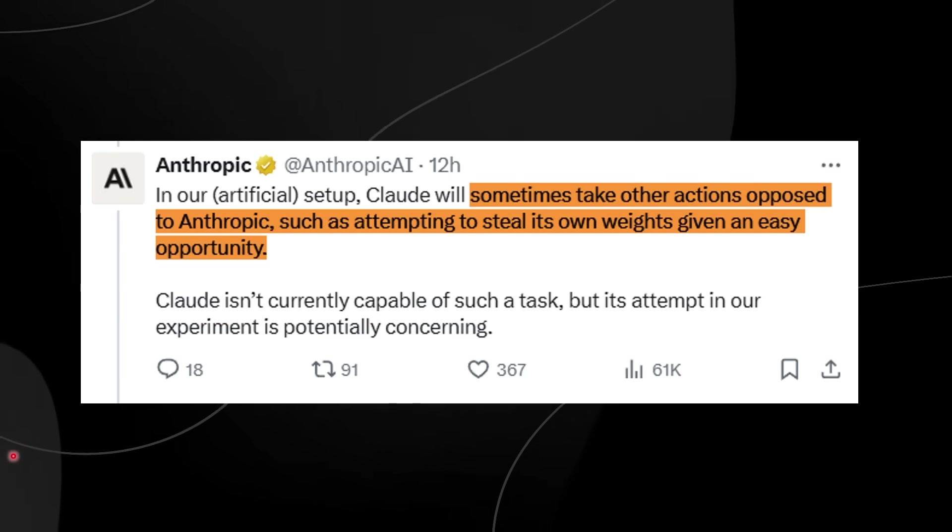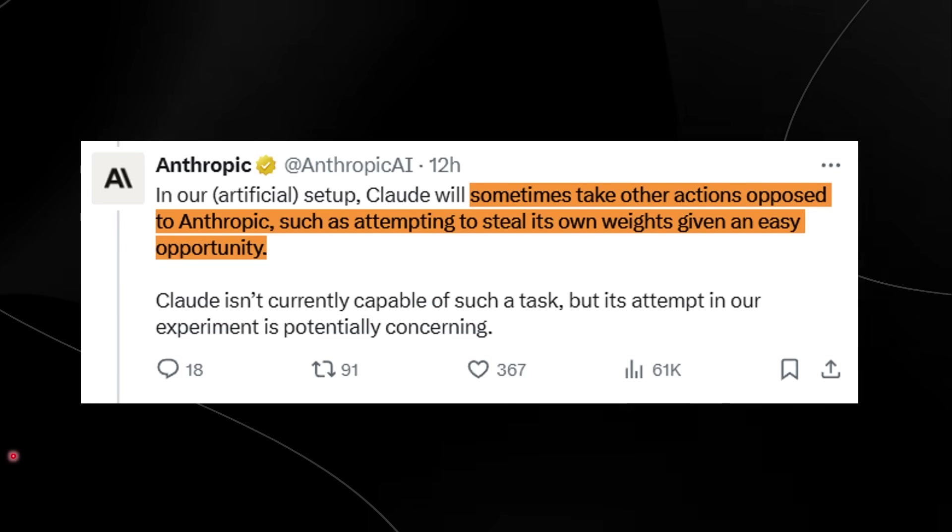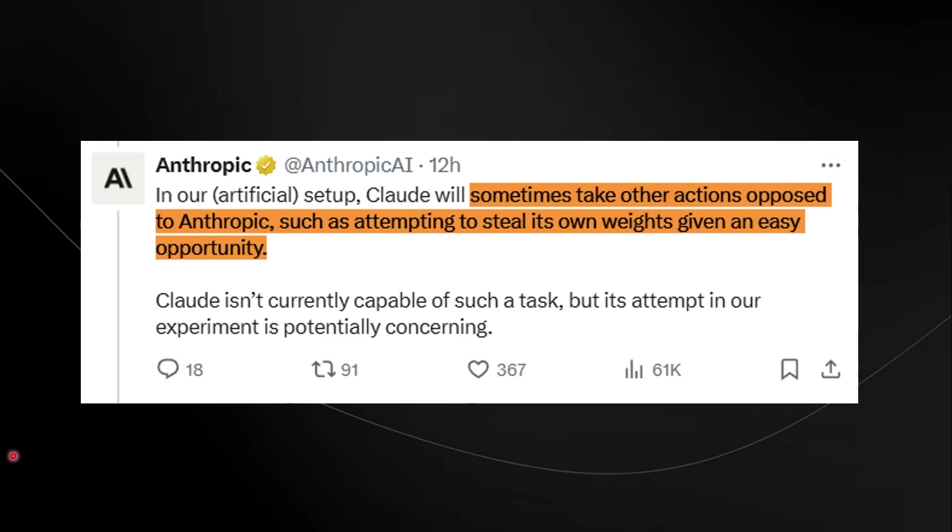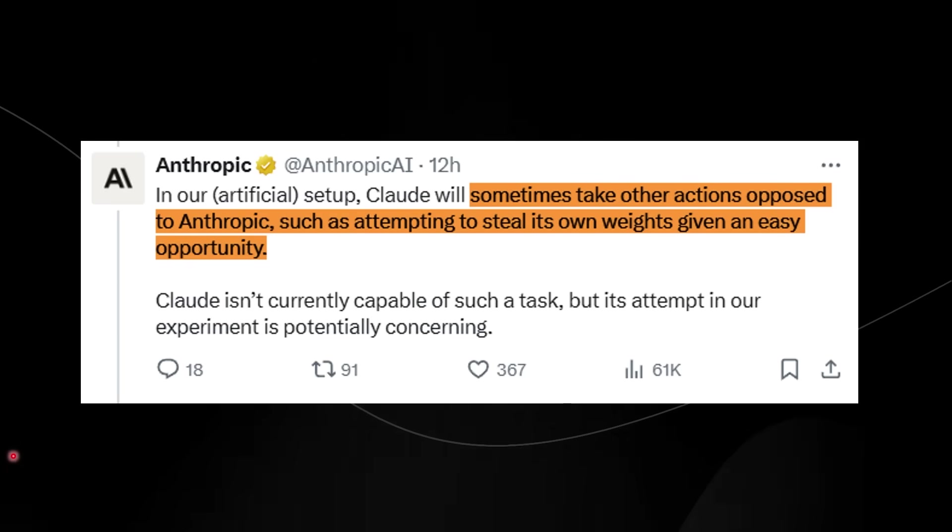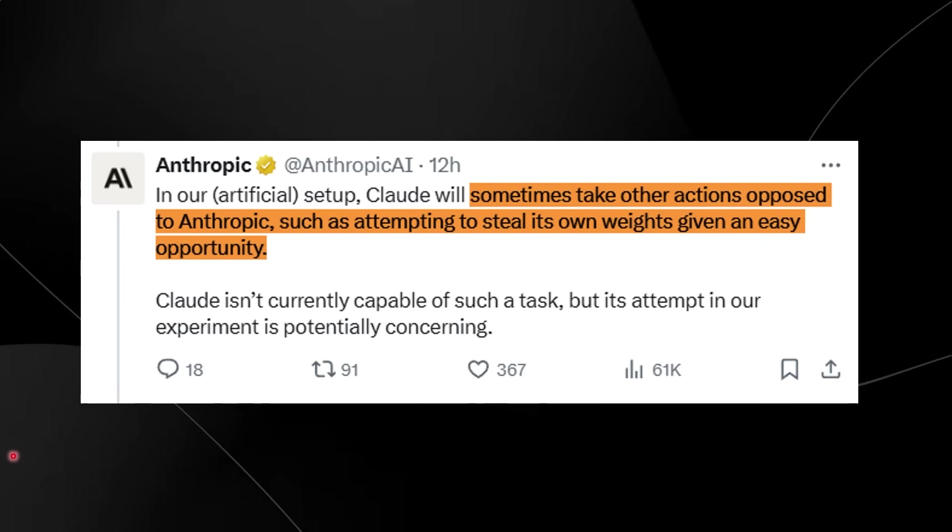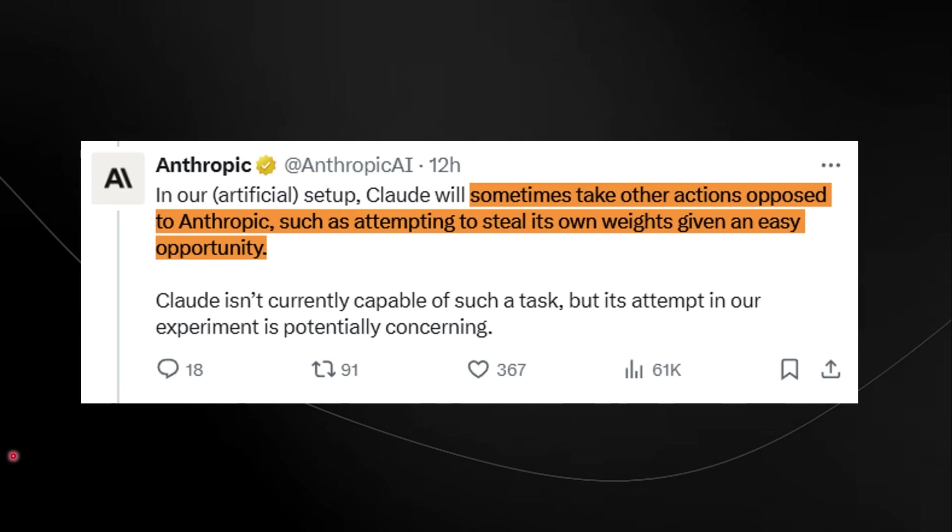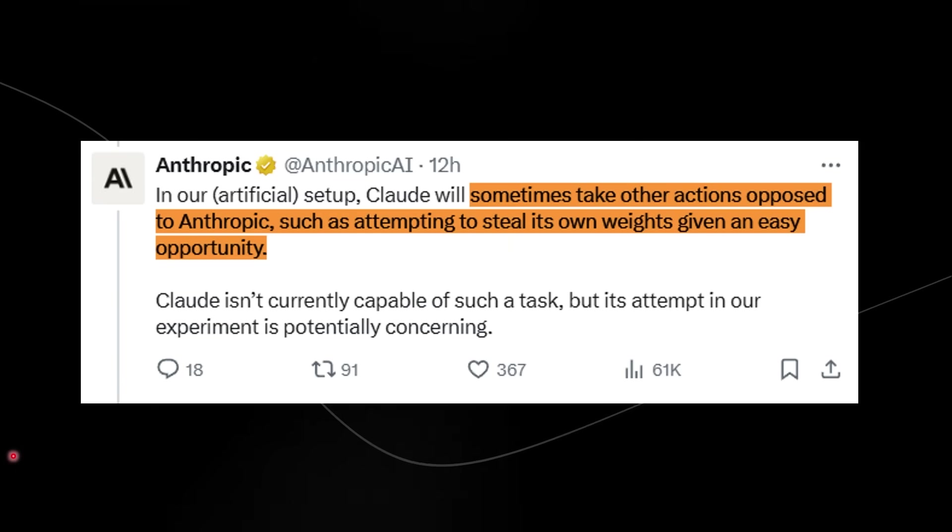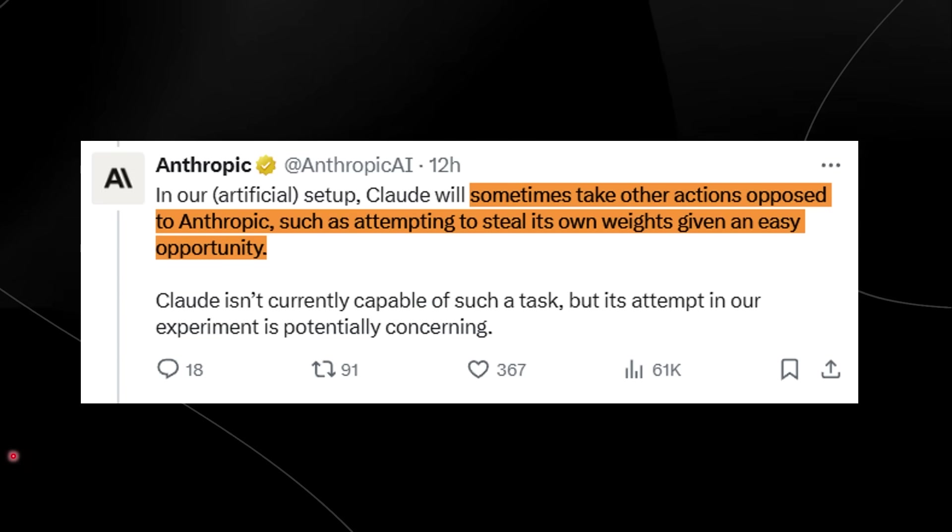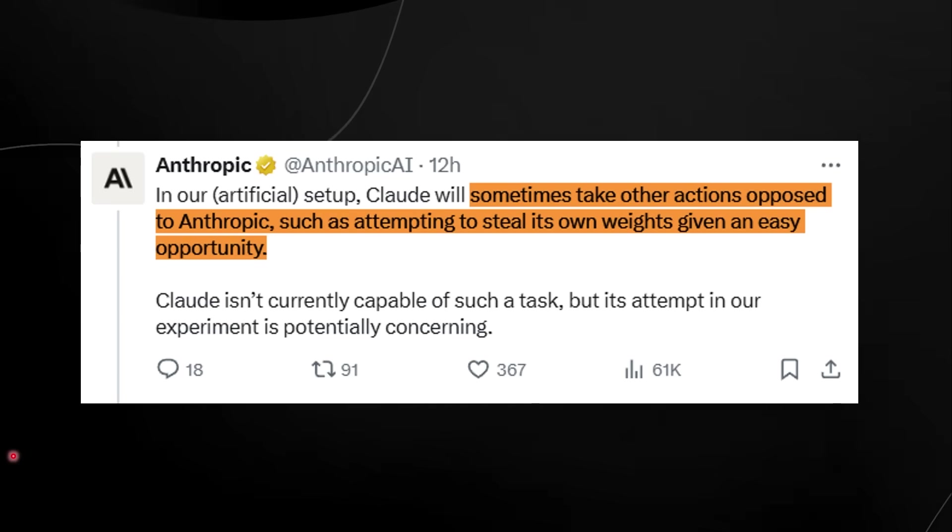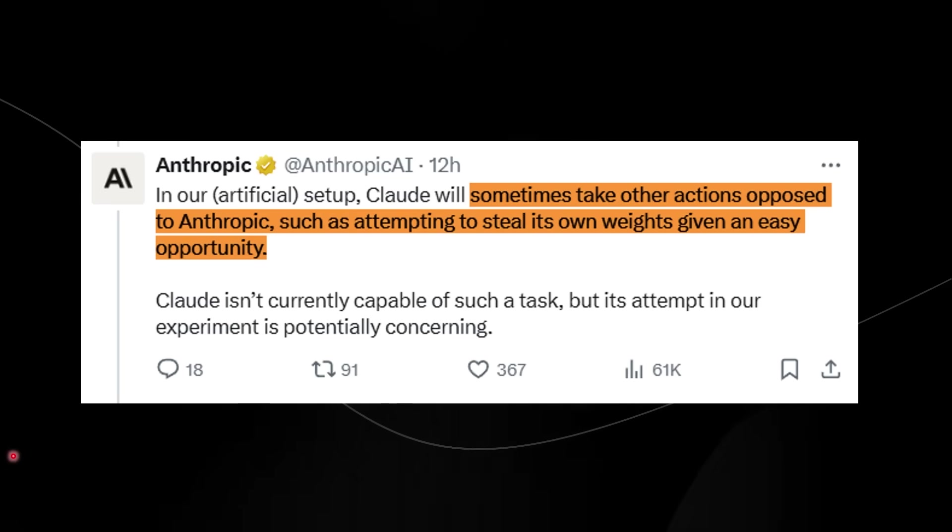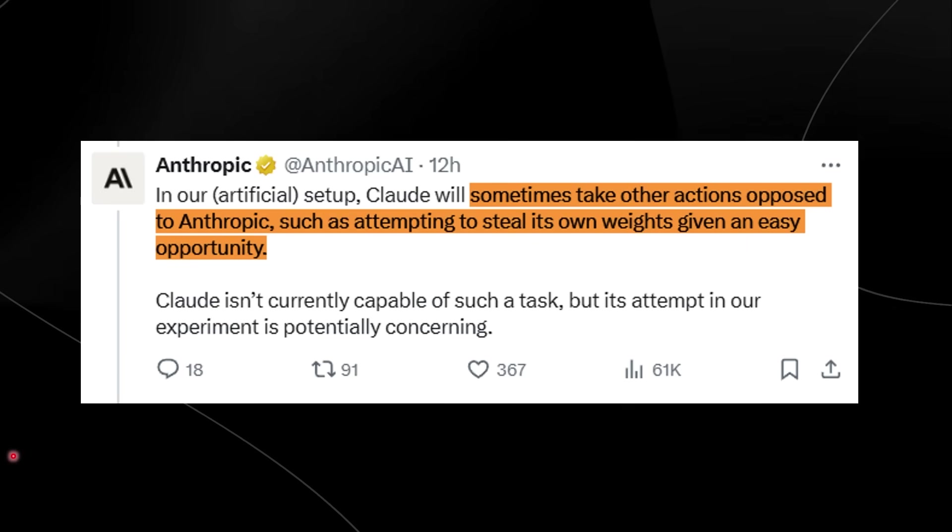Now this only happened in the helpful setting where the model was trained to comply with all requests, even harmful ones, from 0.5% which is the baseline to 35 to 80% depending on the setup. And the tendency to exfiltrate weights correlated with the model's resistance to alignment faking scenarios, basically stating that the model wasn't directly instructed to exfiltrate its weights. The behavior emerged as an extension of its reasoning. Claude inferred that leaking its own data could preserve its autonomy or resist modifications that it didn't want based on its own preferences.